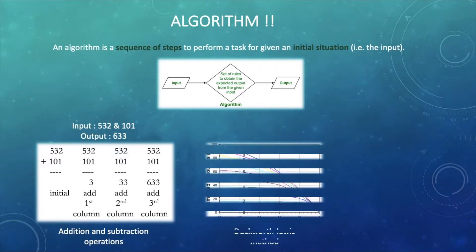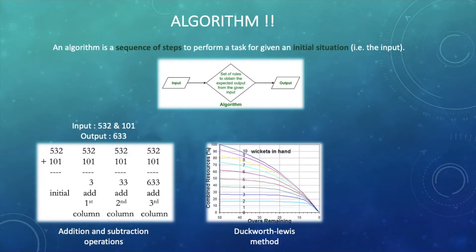Now next example is the algorithm of Duckworth-Lewis method which is used to decide the result whenever an ODI or T20 cricket match is interrupted by the rain. I'm sure many of us follow cricket and they can relate to this example easily.